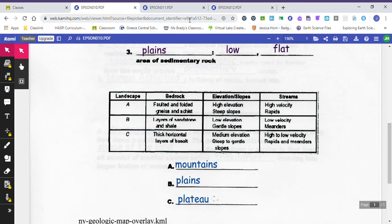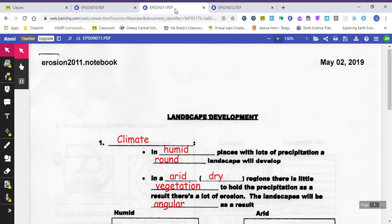We also talked about climate. Climate was one thing that makes a difference in the landscape development of an area. The examples I gave were a humid climate versus a dry climate. In a humid climate there's lots of precipitation, and when there's lots of rain or snow, the landscape is going to be more round. In a dry or arid climate, there's not a lot of vegetation, so there's not a lot of plants there to hold on to the rain. A lot of times plant roots will hold on to the soil. Well, if there aren't a lot of plants, those things aren't going to happen. So in an arid or dry climate we call it an angular landscape.